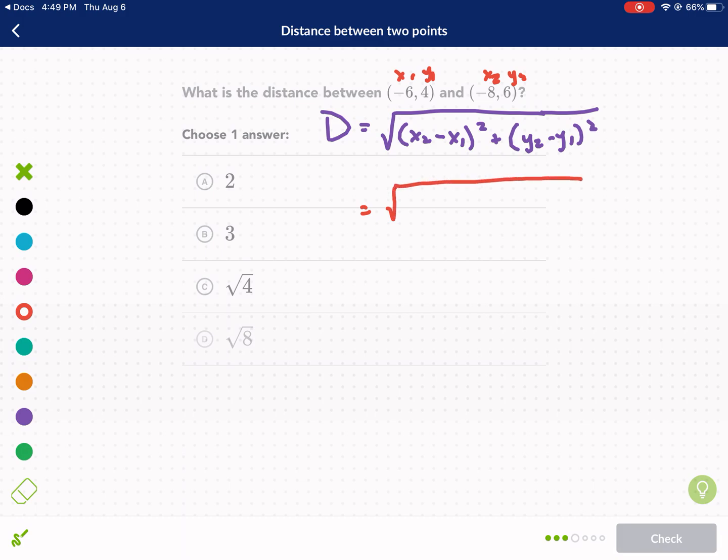So let's plug it in. My x₂ is -8 and I'm going to subtract -6 in parentheses, squared, plus my y₂ is 6 minus y₁, which is 4, quantity squared. Now I'm going to simplify. -8 minus -6. Same thing as -8 plus 6. That gives me -2. Again, the negative is not that important because we're going to square it anyway. Plus 6 minus 4 is 2 squared.